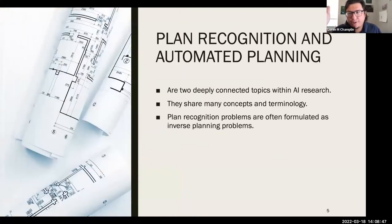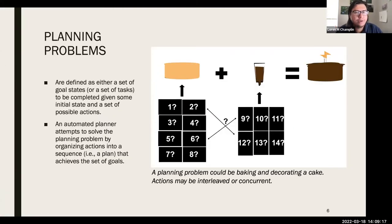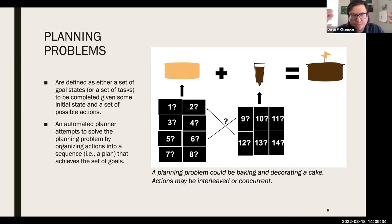Plan recognition and automated planning are deeply connected — they share a lot of concepts and terminology. A lot of the terminology I'll use in this presentation comes from the field of automated planning. Plan recognition problems are often formulated as inverse planning problems. Planning problems are defined as either a set of goal states or a set of tasks, depending on your planning paradigm, to be completed given some initial state and a set of possible actions.